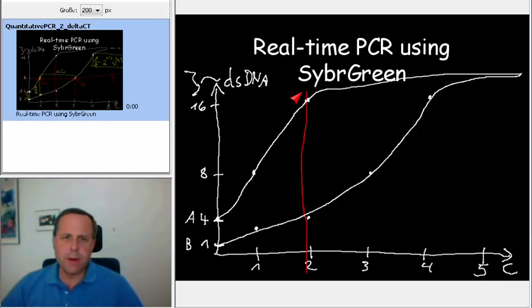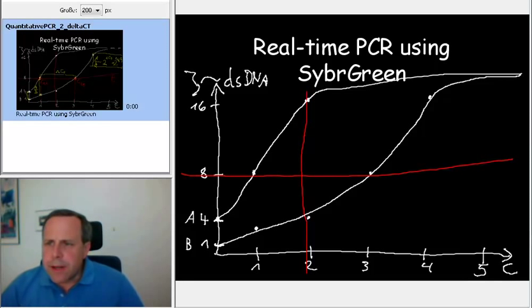So what can we do instead? Well, rather than drawing a vertical line, what we do instead is to draw a horizontal line. Drawing the horizontal line means that we choose a particular intensity corresponding to a particular amount of PCR product and we ask how many cycles does it take to reach that threshold.